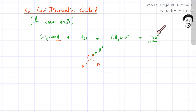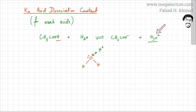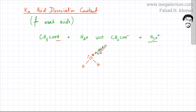H₃O⁺ and H⁺ can be used interchangeably. Whenever we talk about acids producing H⁺ ions, what we can indirectly infer is that acids produce H₃O⁺ ions. In a lot of equations, H₃O⁺ and H⁺ are written interchangeably because all the H⁺ ions are going to combine with water to form H₃O⁺.